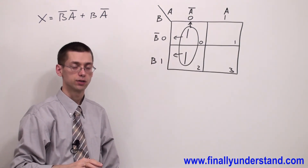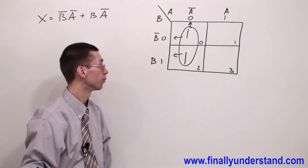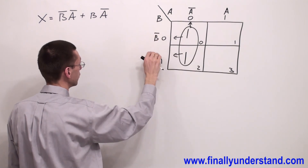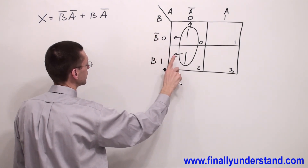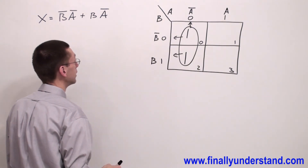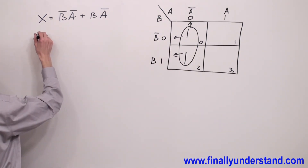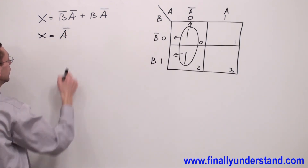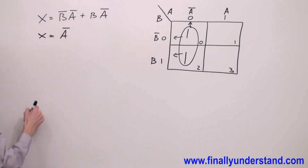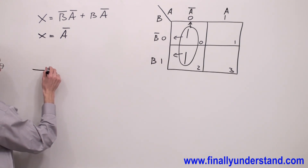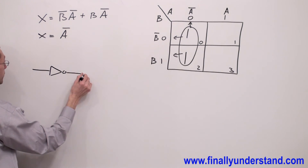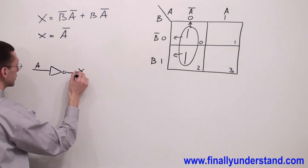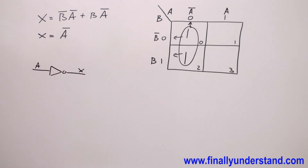I always start from the most significant bits. On the side of these two rows I have complements B-not and B. Anytime you see complements, simply ignore them — we don't pay attention to them. So we assume we don't have anything on the left side. Simply go up, and at the top we are seeing A-not. That's why the answer to my problem is nothing else but A-not. If you want to implement this expression, this is nothing else but an inverter with input A and output X. These are the answers to my problem.